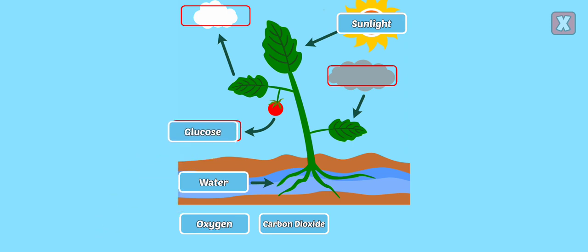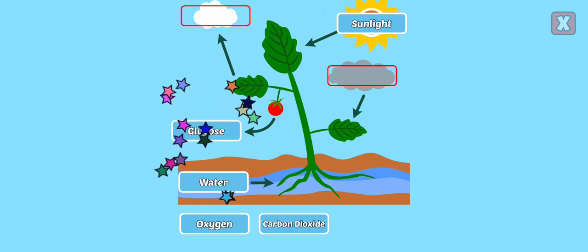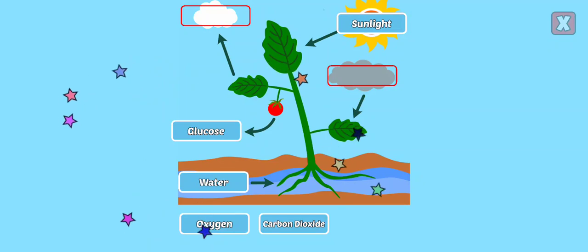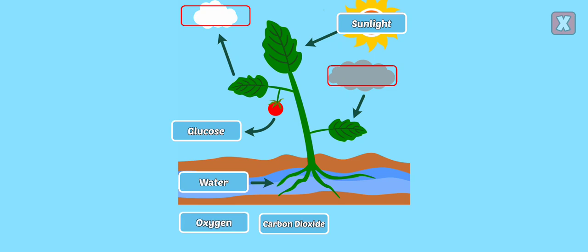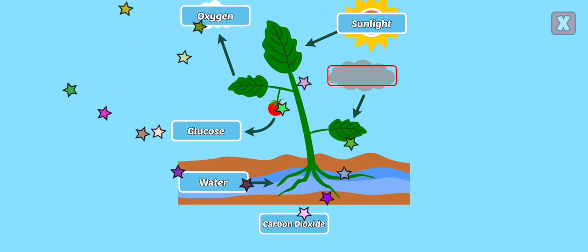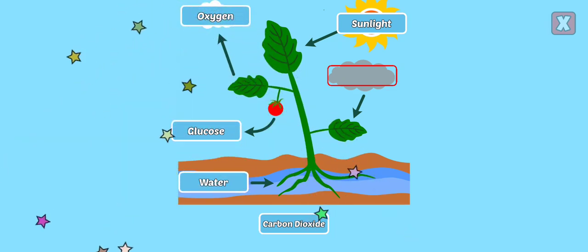Glucose. Glucose is a form of sugar created through photosynthesis and is used as food for the plants. Oxygen is released from the leaves into the atmosphere as the byproduct of photosynthesis.